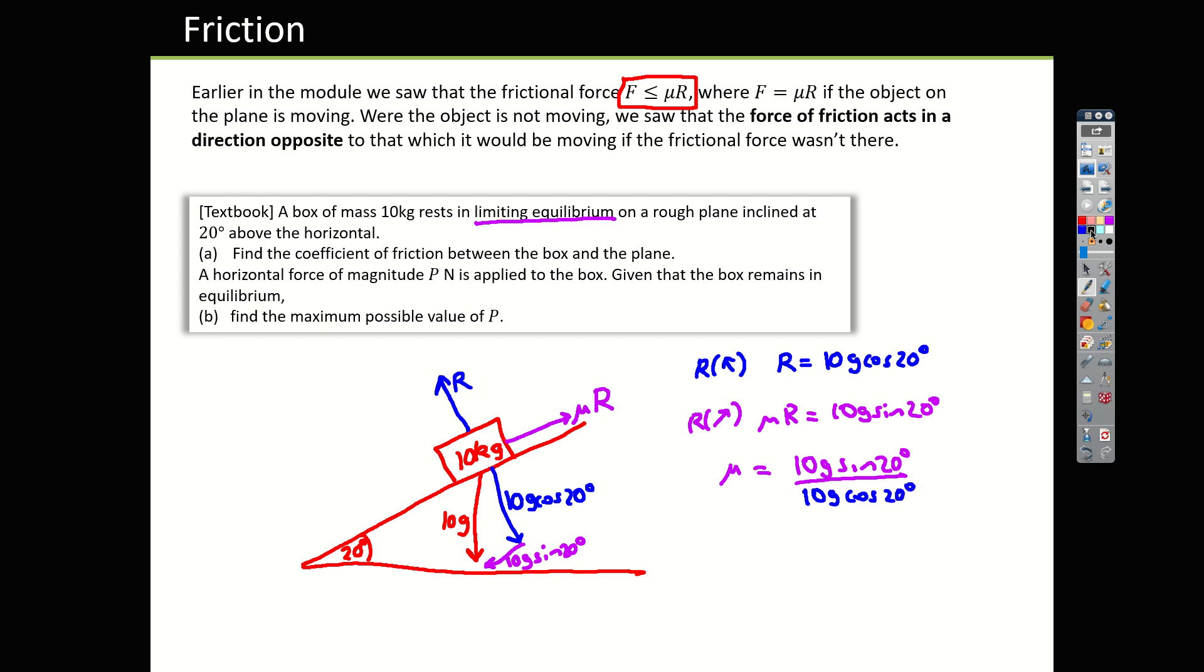That's going to produce a lot of canceling. 10g cancels. Sin 20 over cos 20 is tan of 20 degrees. Which, if you then want the decimal for that, it ends up being roughly 0.364 for your coefficient of friction.